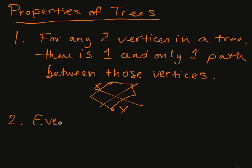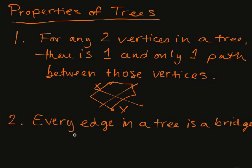The second thing is every edge in a tree is a bridge. And in fact, this goes both ways. If I find a graph in which every edge is a bridge, then it's a tree. I know that it's a tree. If I find a graph in which for any two vertices, there's one and only one path between them, then it is a tree. So these are kind of checks as well as properties.